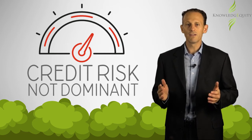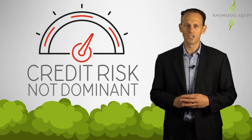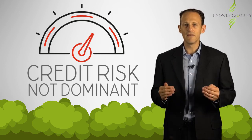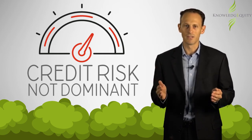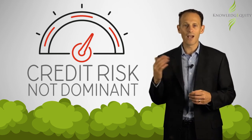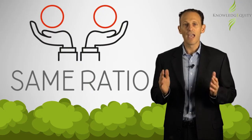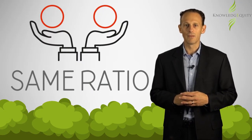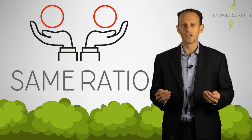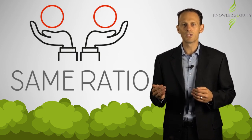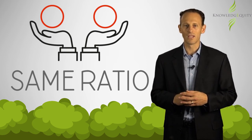Secondly, the effect of credit risk cannot dominate the fair value changes that result from the economic relationship. The significance of credit risk as a component of determining the fair value of the hedge involves judgement. Credit risk may arise from the counterparty or the entity's own credit risk. And lastly, the hedge ratio for accounting must be the same as that used for the actual risk management purposes. The hedge ratio is defined as the relationship between the quantity of the hedging instrument and the quantity of the hedged item in terms of their relative weighting.